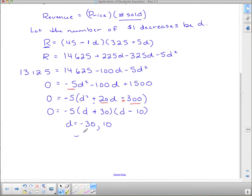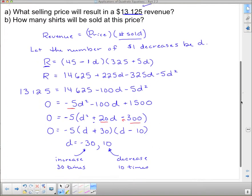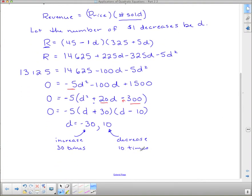d equals negative 30 or d equals 10. Now negative 30 doesn't make any sense. Negative 30 corresponds to an increase, not a decrease, an increase 30 times by a dollar. And we don't want to increase it, we want to decrease it. So this one here corresponds to a decrease 10 times, and that's for a dollar. So we want to decrease it 10 times by a dollar. It started off as 45, and here's our price function.